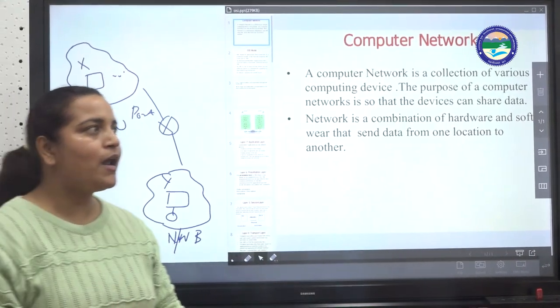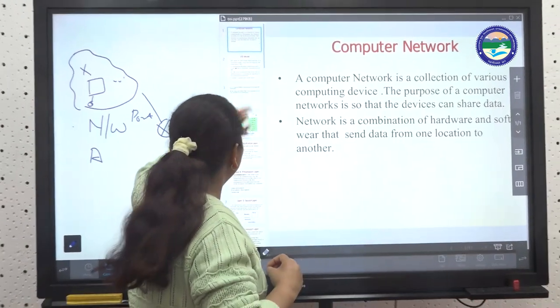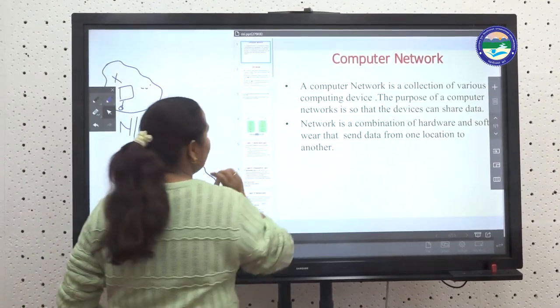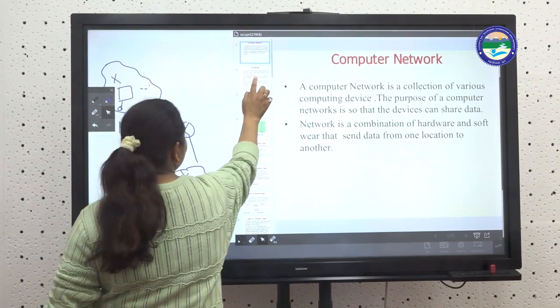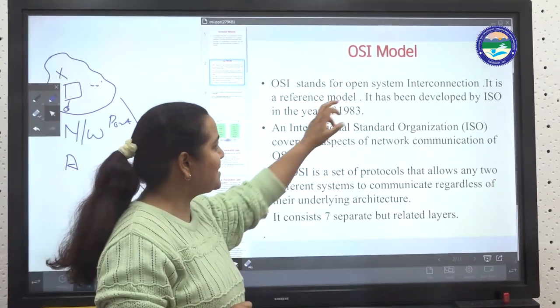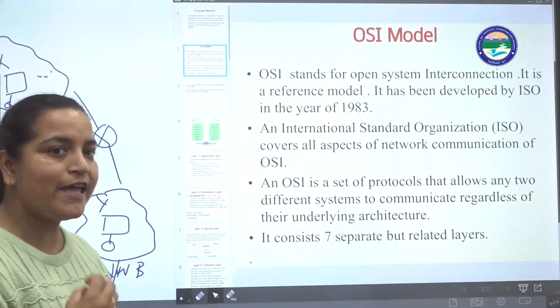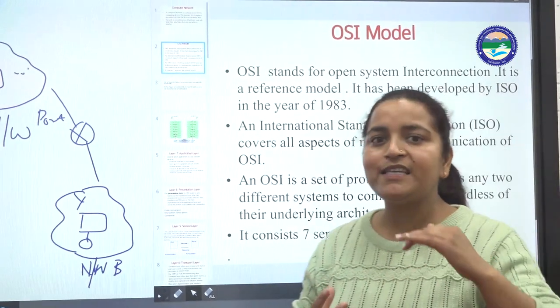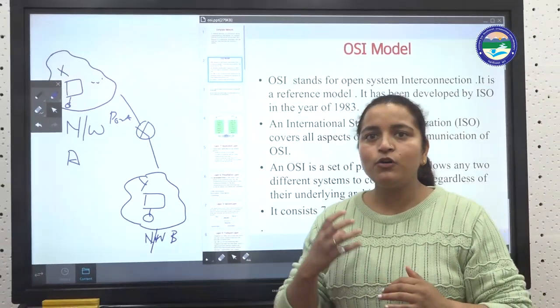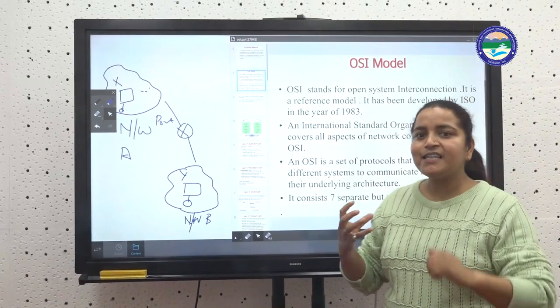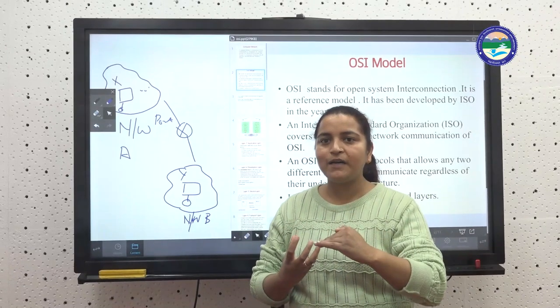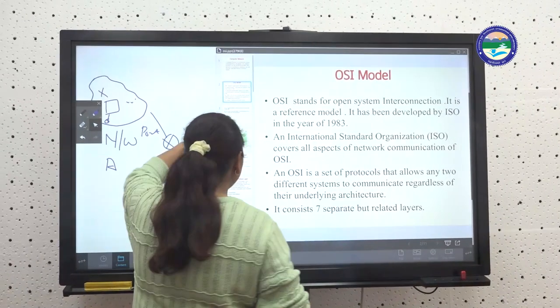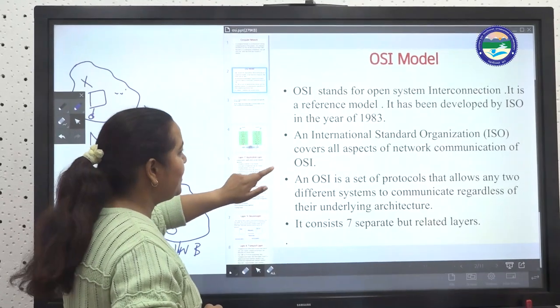OSI stands for Open System Interconnection model, which was developed by ISO in the year 1983. OSI is a set of protocols or standards which decide the rules for communication, because our communication is global. OSI has a seven layer architecture, and each layer has different functionality.